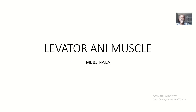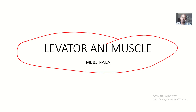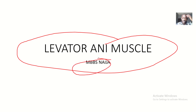Today we'll be talking about the anatomy of the levator ani muscles. The levator ani is actually a group of three muscles coming together: puborectalis, pubococcygeus, and iliococcygeus.